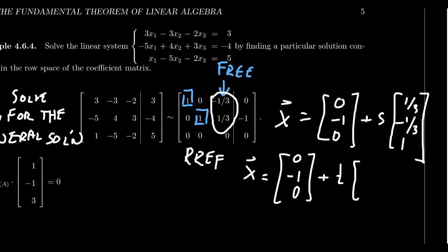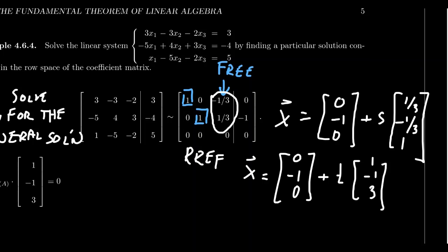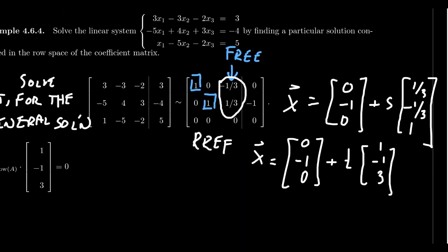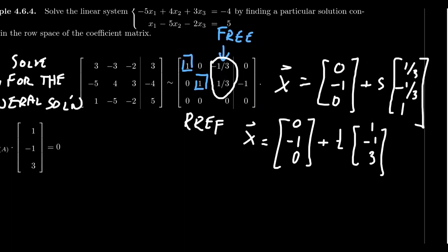So we get, times everything by three: one, negative one, and three. So [1, -1, 3] gives us a basis for the null space of A that doesn't require any fractions. So this right here is the general solution.